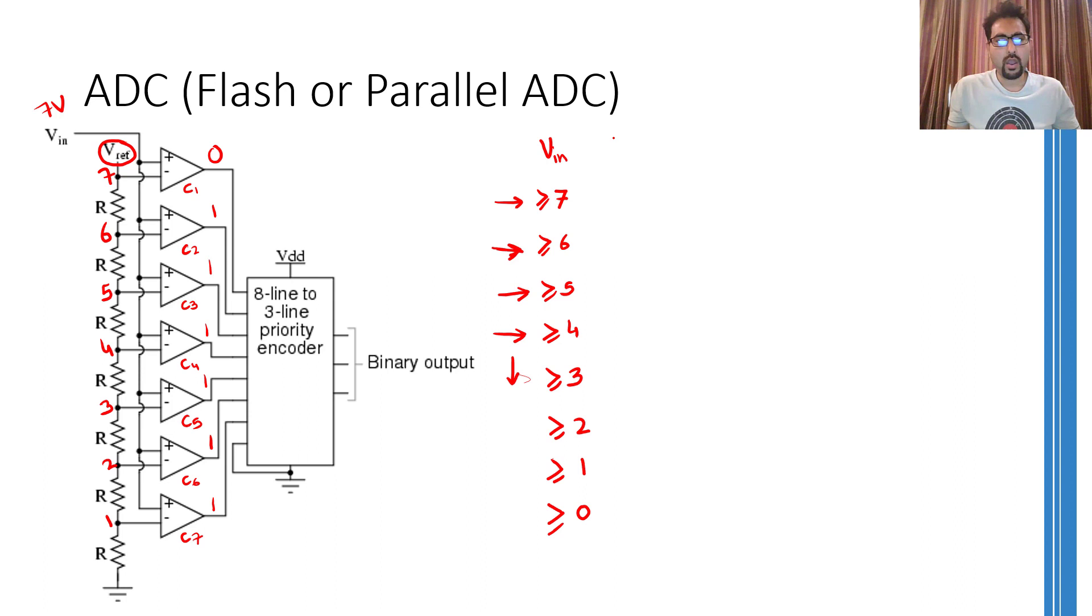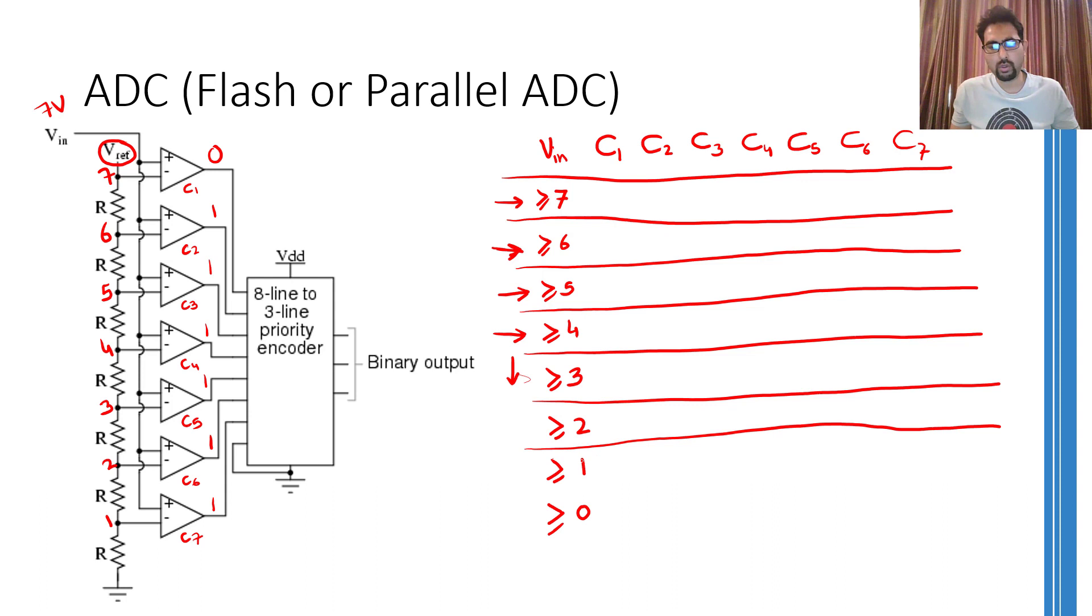So whatever is the input voltage, what will be the corresponding condition or the output of the comparator? Let me write down the values over here by first writing their names. So I can have a table like this which can be used to tabulate all the values.